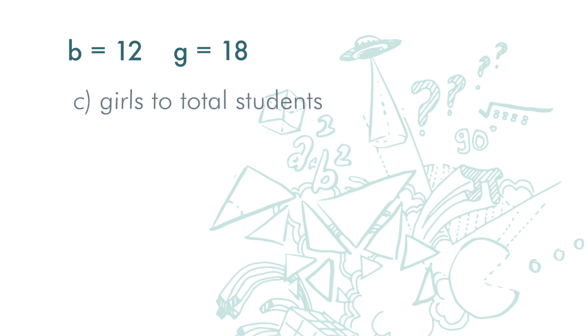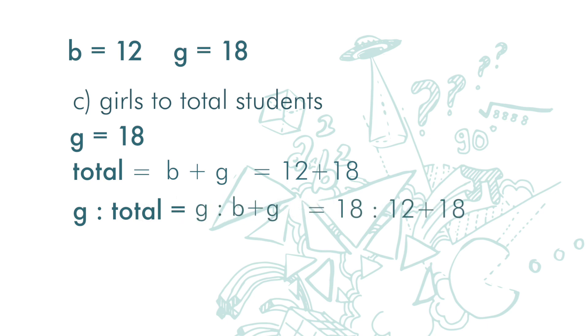Next, the ratio of girls to total students. There are 18 girls. Total students, again, we add up the boys and girls, which is 12 plus 18. So the ratio of girls to total is girls to boys plus girls, which is 18 to 12 plus 18, and that gives us 18 to 30. We can simplify that to 3 to 5.